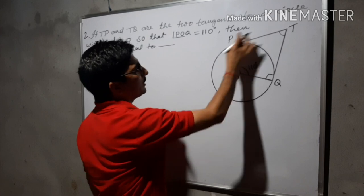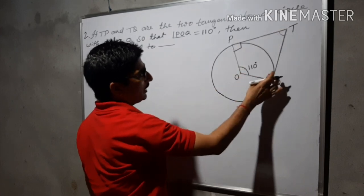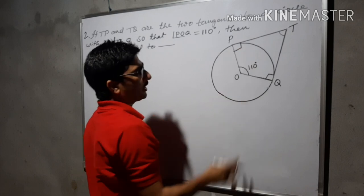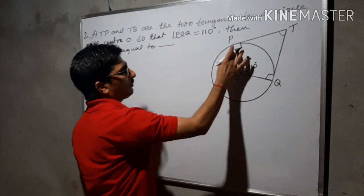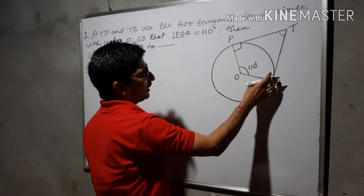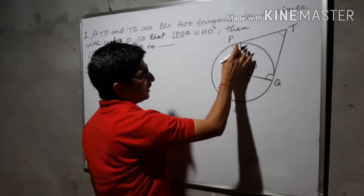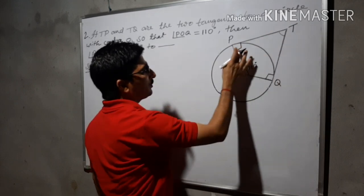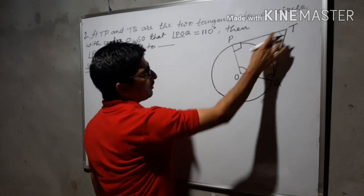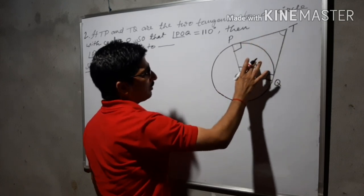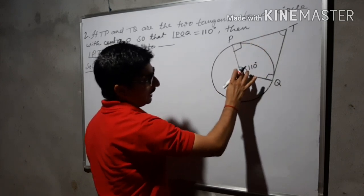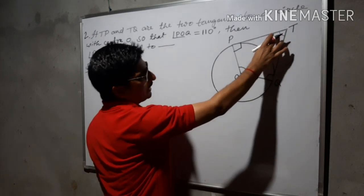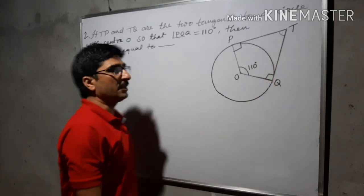Check: this is the radius and this is the tangent. Similarly here also this one is the tangent and this is the radius. Tangent and radius are perpendicular to each other. Therefore this angle is 90 degrees and this one also 90 degrees. Now the sum of these two angles will also be 180 degrees. Out of 360 degrees for the quadrilateral, these two are 180, this is 110, then the remaining PTQ will be 70 degrees. Your answer will be 70 degrees.